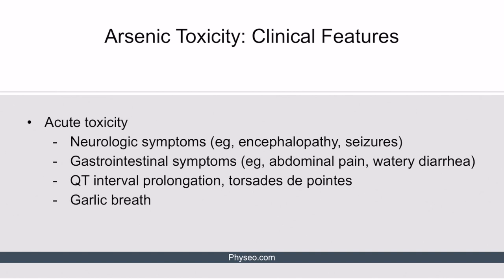Clinical features of arsenic toxicity can be broken down into acute, chronic, and latent toxicity. Acute toxicity can manifest as neurologic symptoms such as encephalopathy or seizures, or gastrointestinal symptoms such as abdominal pain or watery diarrhea. Arsenic toxicity can also lead to QT prolongation, which can quickly progress to torsades de pointes. Patients with acute arsenic poisoning are often described as having garlic breath, which can be an important clue on the boards.